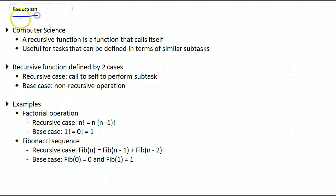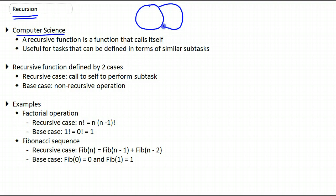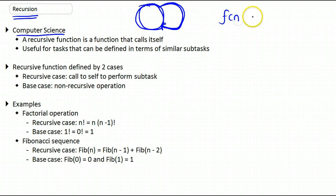In this video we look at the concept of recursion in computer science. Recursion is essentially to define something, a task or an operation, using that same task or operation. So we would define something using that same thing — we would use ourselves to define ourselves. This concept comes up in computer science in the form of functions defining themselves.